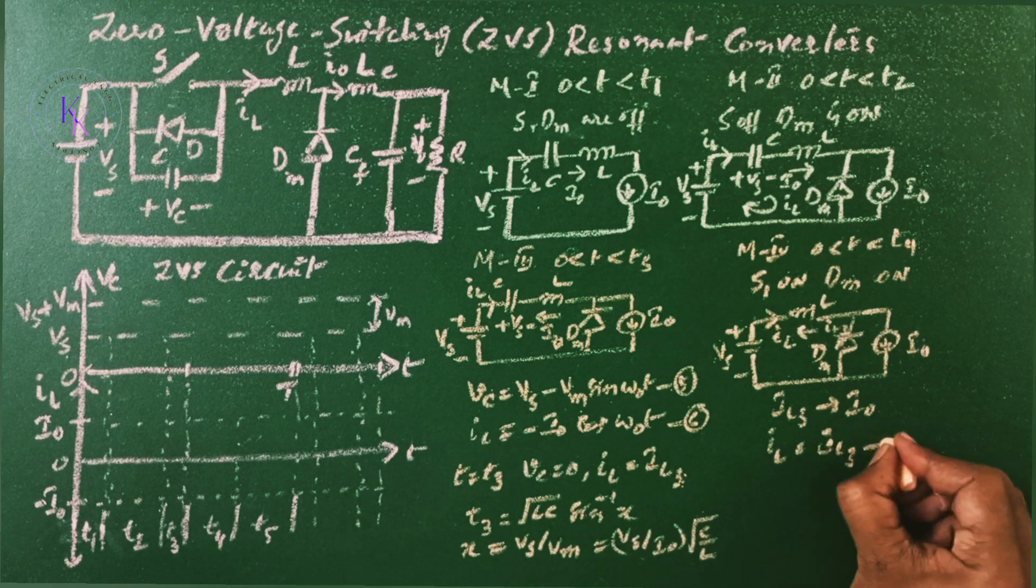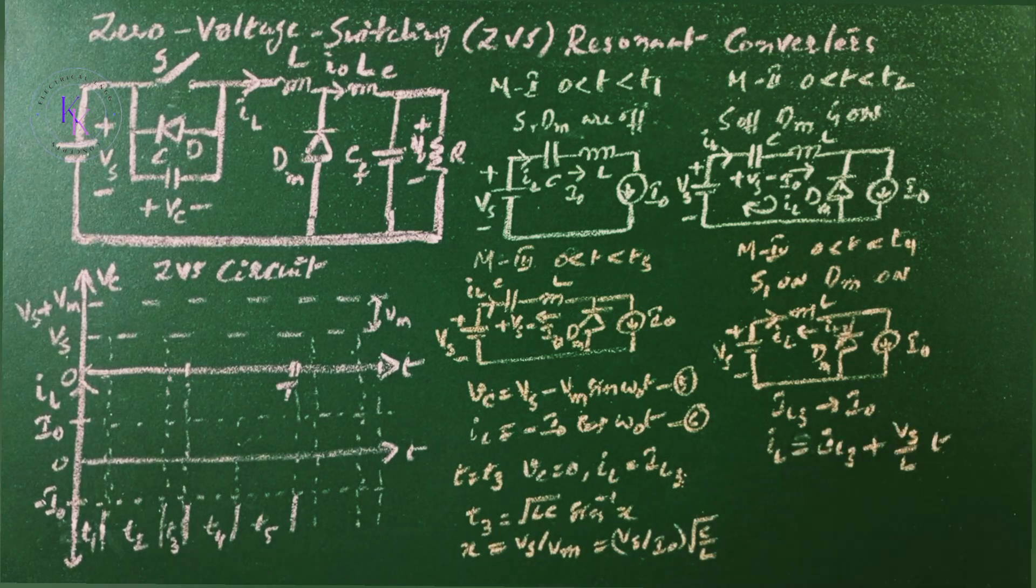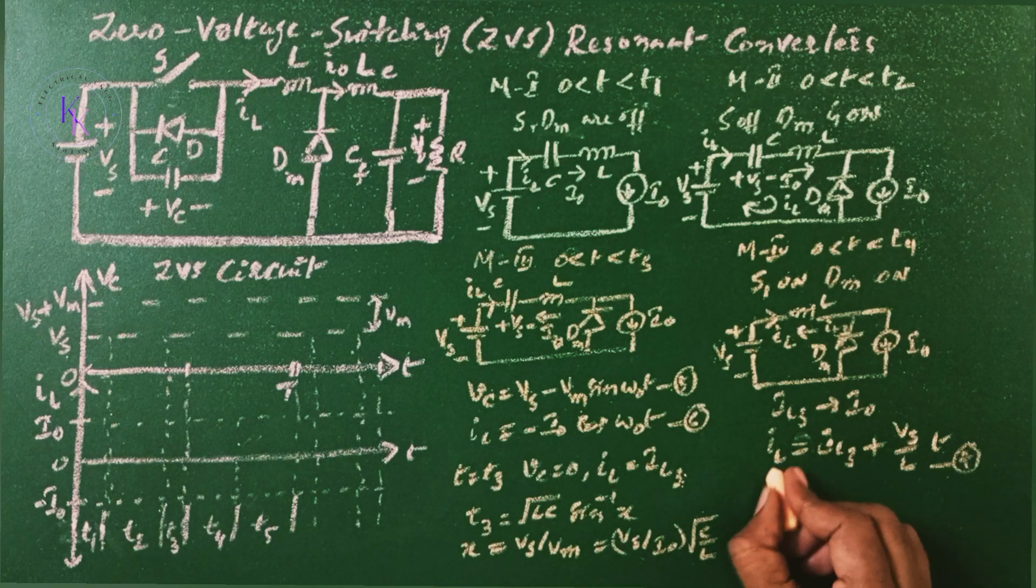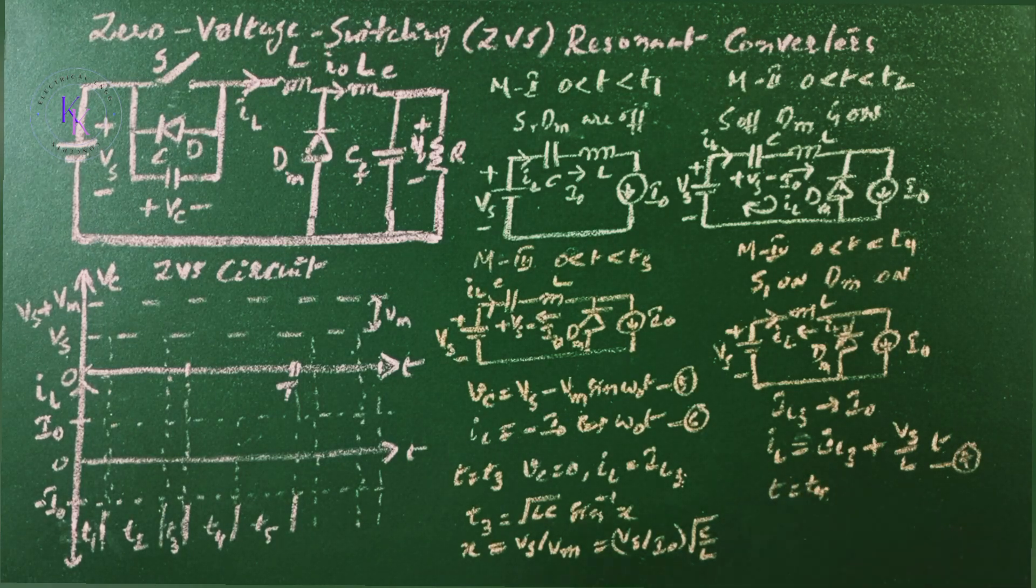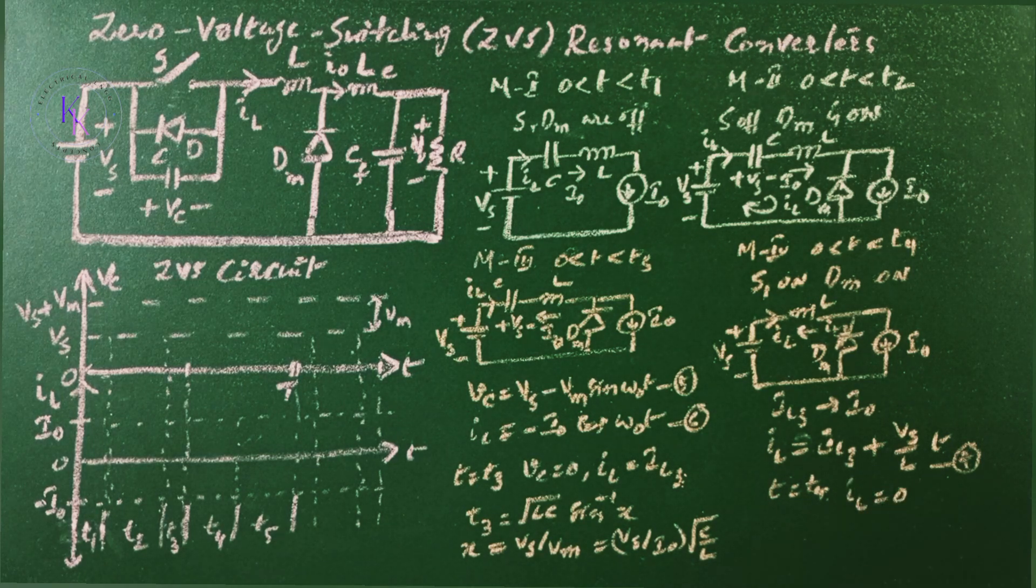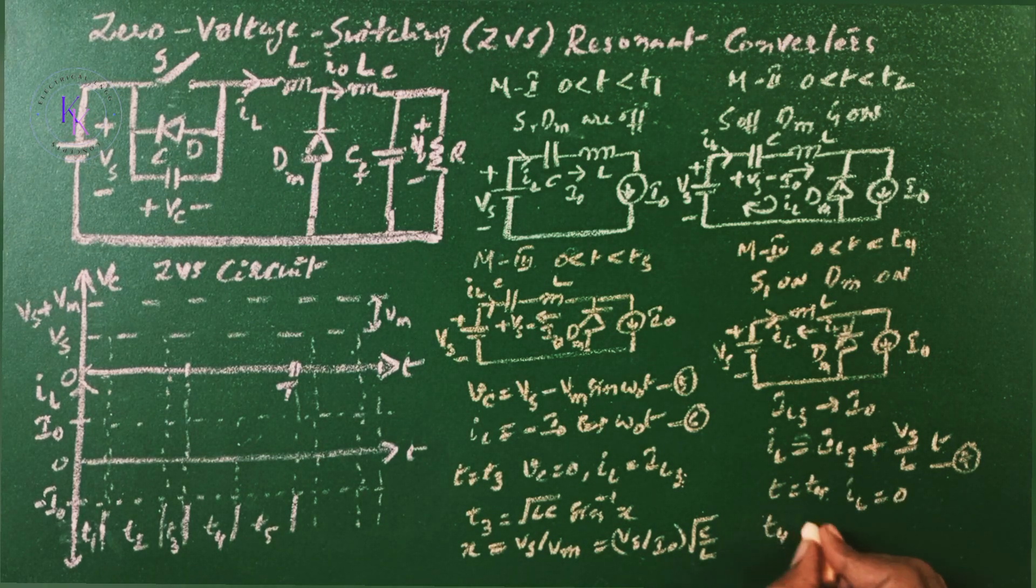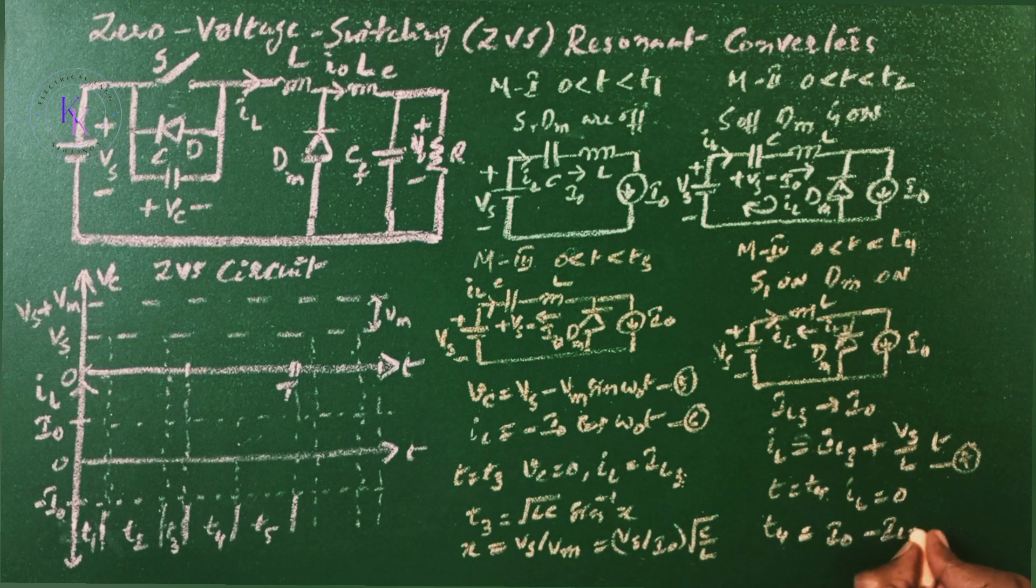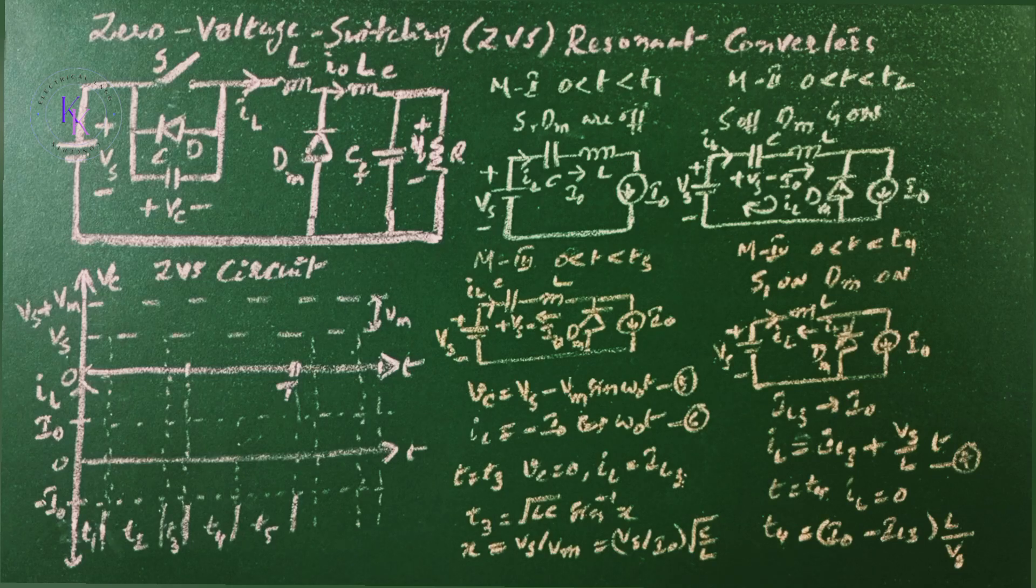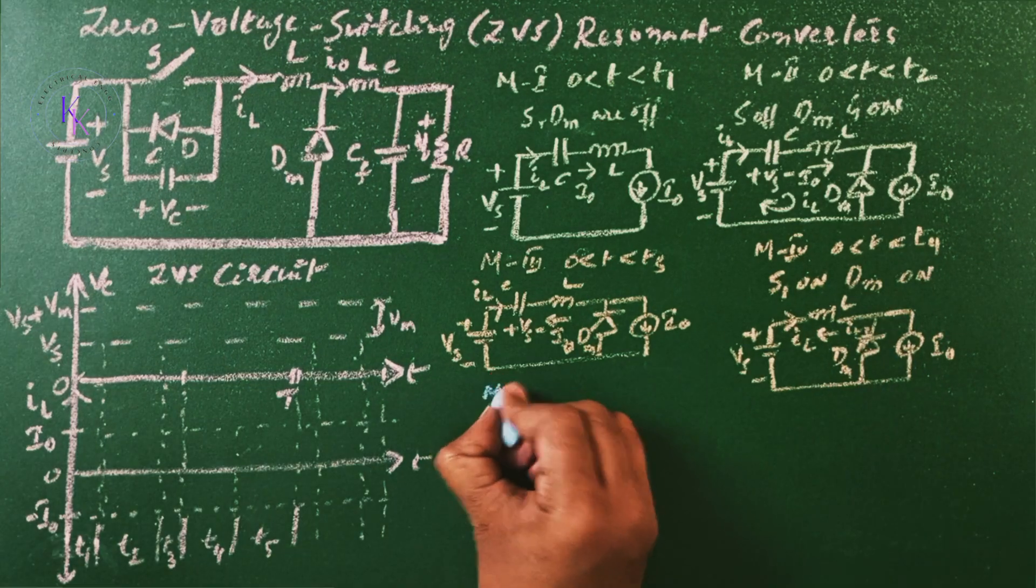The inductor current which rises linearly from IL3 to I0 is given by IL equals to IL3 plus VS by L T. And this mode is going to end at T equals to T4, at that stage IL equals to zero, then T4 equals to I0 minus IL3 L by VS. And from the figure we know that IL3 is the negative value.